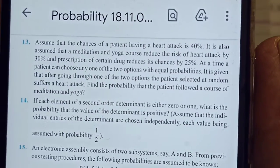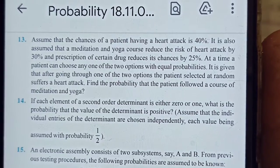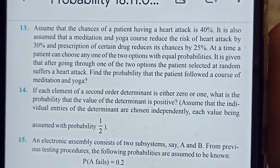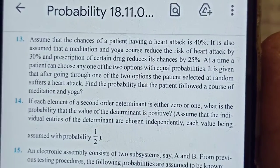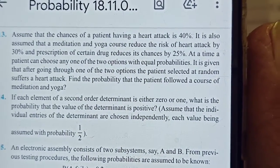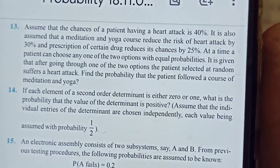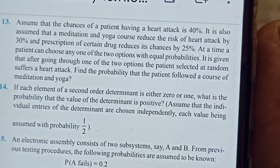Okay children, now question number 13 from the miscellaneous exercise is saying: assume that the chance of a patient having a heart attack is 40 percent. It is also assumed that meditation and yoga course reduces the risk of heart attack by 30 percent, and prescription of a drug reduces it by 25 percent. At a time, a patient is chosen and he can opt for any of the two options.